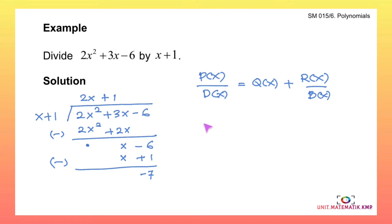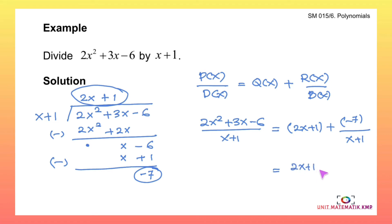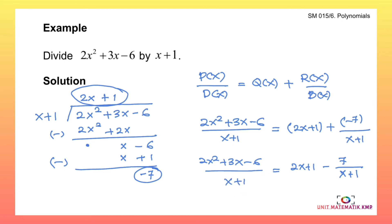Substituting: 2x squared plus 3x minus 6 over x plus 1 equals quotient 2x plus 1 plus remainder negative 7 over divisor x plus 1. Simplified: 2x plus 1 minus 7 over x plus 1. The polynomial is 2x squared plus 3x minus 6 over x plus 1. This is our final answer.